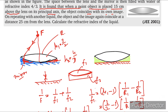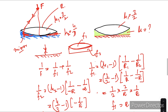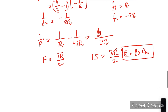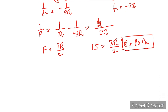Now the second part says that instead of water, another liquid with unknown refractive index μ is filled. We have to find this μ. Here μ₁ for the glass lens remains 3/2.